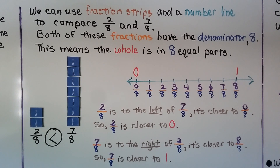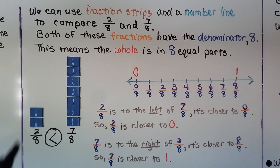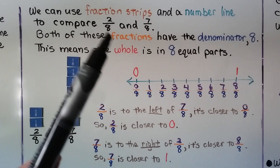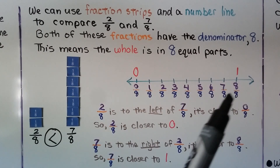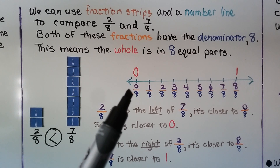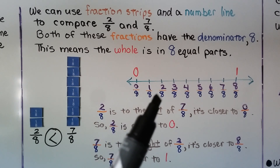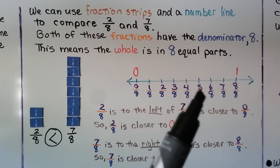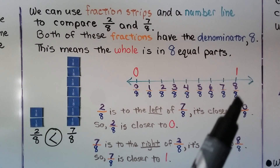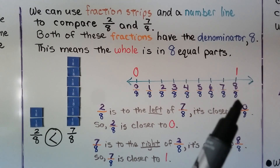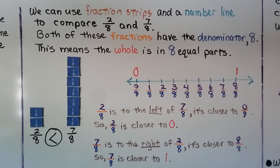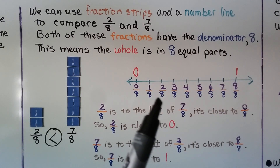We can use fraction strips and a number line to compare 2 eighths and 7 eighths. Both fractions have the denominator 8, meaning the whole is in 8 equal parts. We have 0 for 0 eighths, then 1 eighth, 2 eighths, 3 eighths, 4 eighths, 5 eighths, all the way up to 8 eighths — same numerator and denominator, which means we have all 8 parts, equal to 1 whole.